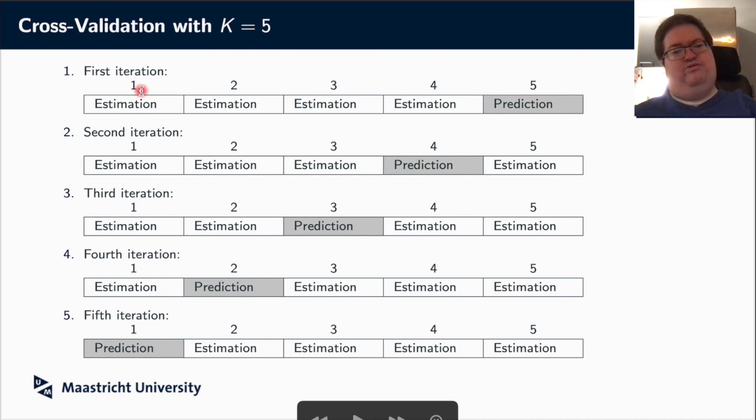So graphically, it looks like this. You split your data into five folds here. First, you use the first four for estimation and the fifth for prediction and evaluating the prediction. Then you redo it, but you use the fourth one instead for prediction. So now you use the fifth one as well for estimation and so on. So you have five iterations to be done here.